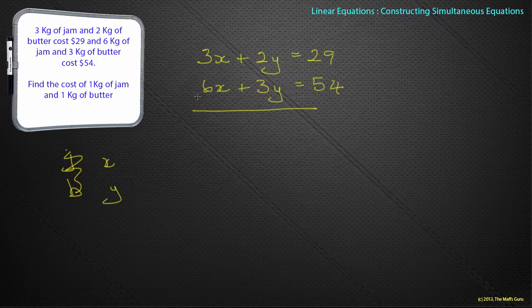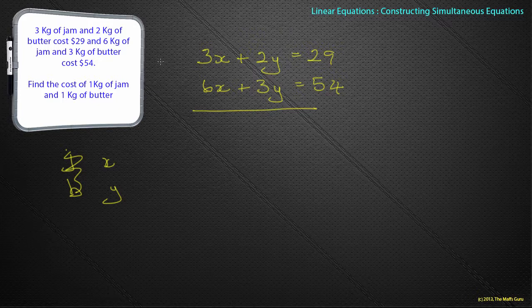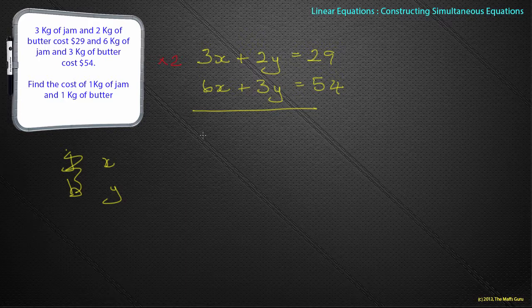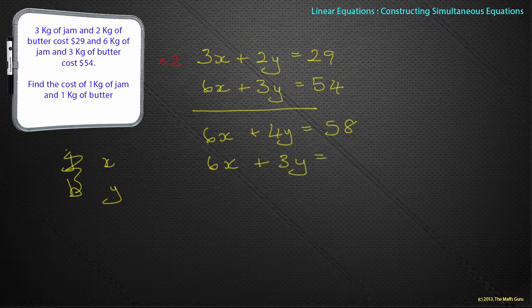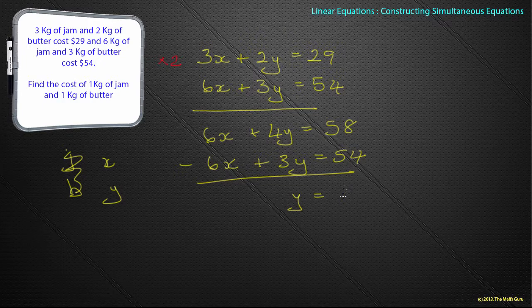And if you remember, because the columns aren't the same, but I need to do something to make the columns the same, it seems easiest to multiply that one by 2, the whole equation. And so we come up with 6x plus 4y is equal to 58. And 6x plus 3y is equal to 54. One of the columns are the same, so we can take them away because they're both positive. So 4y minus 3y gives me y, and y works out to be 4.